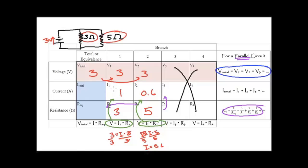Now, if I know the current down branch one and I know the current down branch two, is there any way that I can figure out the equivalent current? Yeah, because I know that 1.6. Because you add them. Yep, you add them all up. So that equals one plus 0.6, and that gets 1.6.